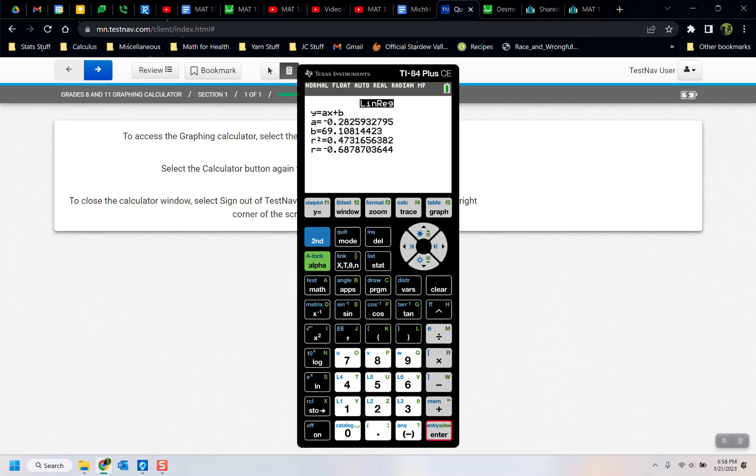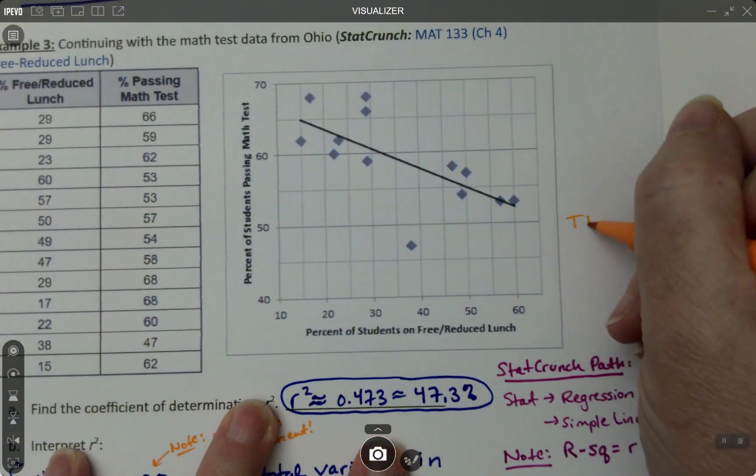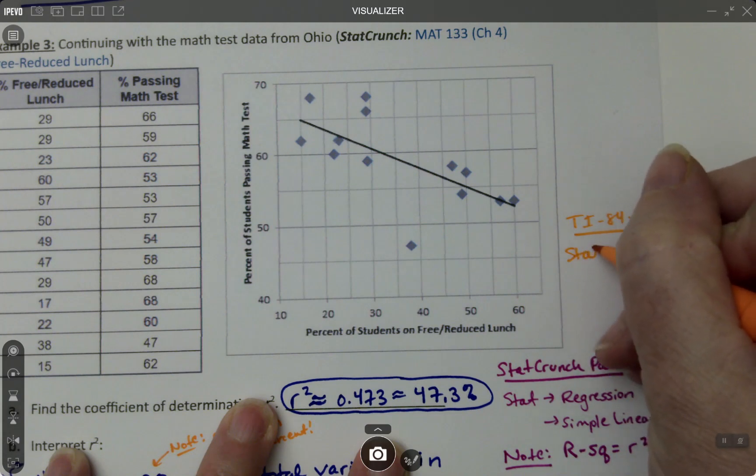That's it, that's how to do it. So if you want to write instructions for yourself: TI-84, it's Stat, then Calc, then number 4, LinReg.